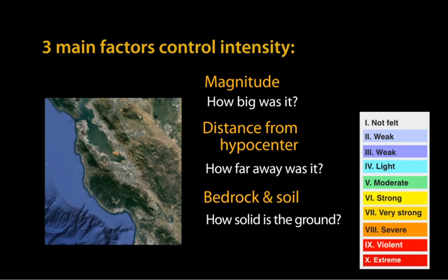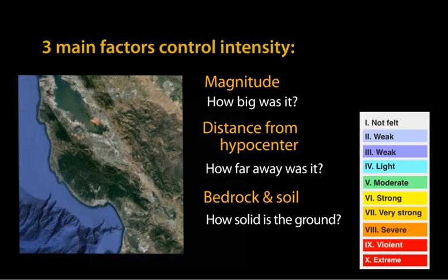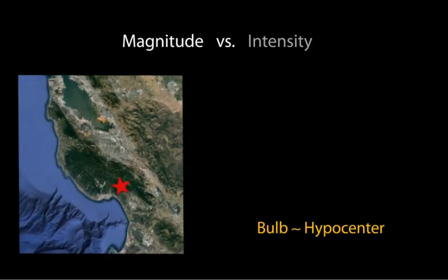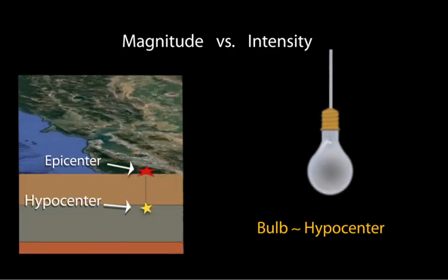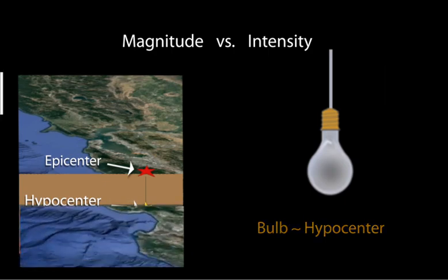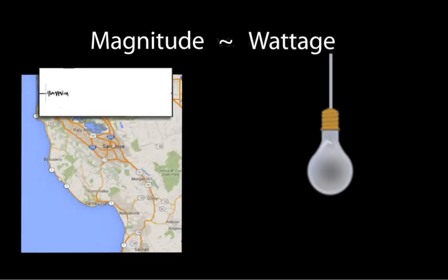Let's compare magnitude and intensity by using a light bulb as an analogy. The light bulb represents the location within the earth called the hypocenter, where the earthquake begins. The magnitude, or size of an earthquake, is like the wattage of a light bulb.